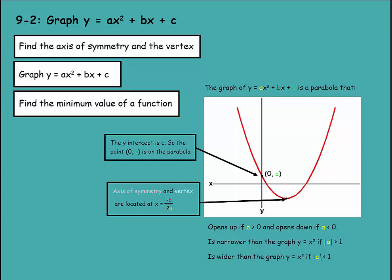We're in lesson two of chapter nine, where we're going to graph y equals ax squared plus bx plus c. First, we're going to find the axis of symmetry and the vertex. Then we're going to graph y equals ax squared plus bx plus c. Then we'll find the minimum value of a function.